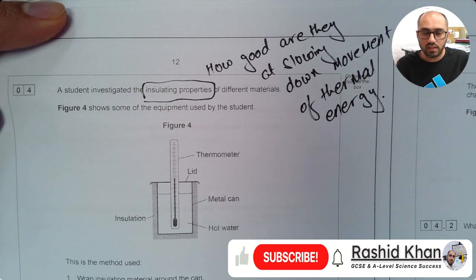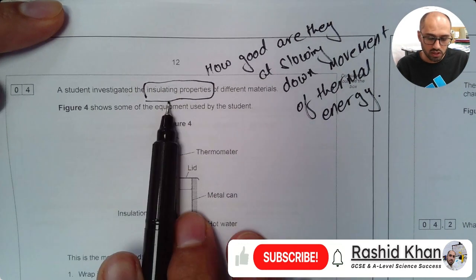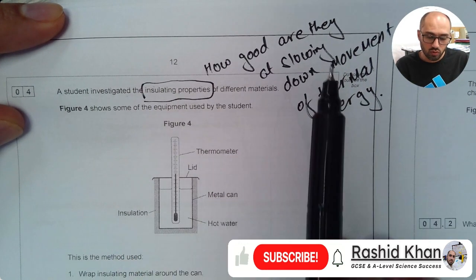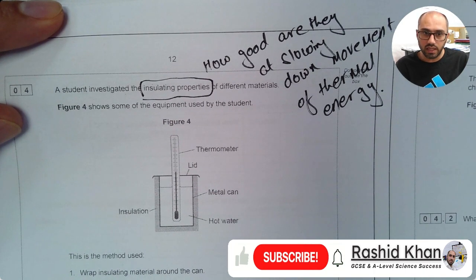Question 4. A student investigated the insulating properties of different materials. Insulating properties means they are trying to determine how good a material is at slowing down movement of thermal energy.